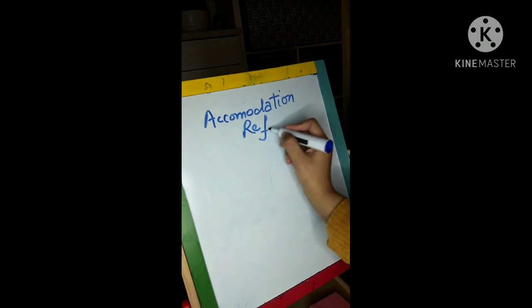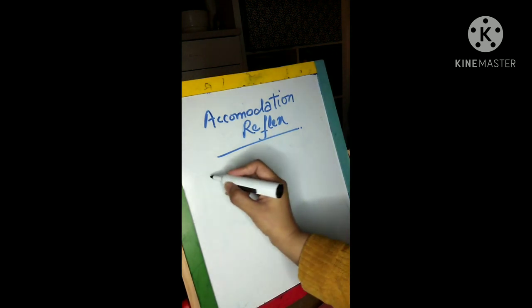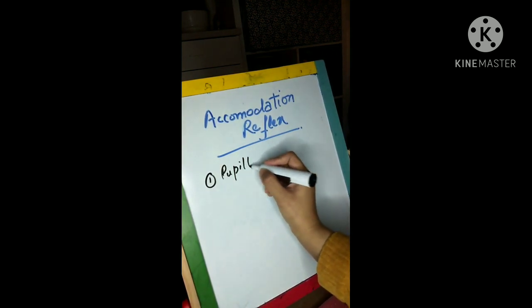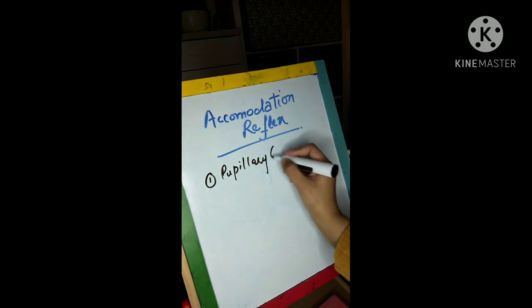For accommodation reflex we need three things to happen. When we are looking at a far object and now we are trying to focus on a nearby object, then three things should happen so that we can focus on that thing. What are these three things or three actions? First of all there should be pupillary constriction so that we can see the image clearly.